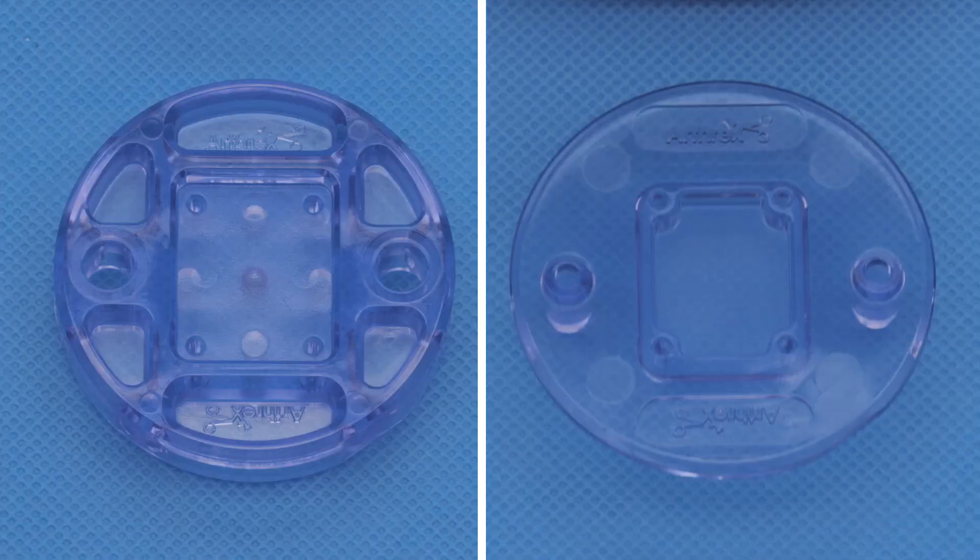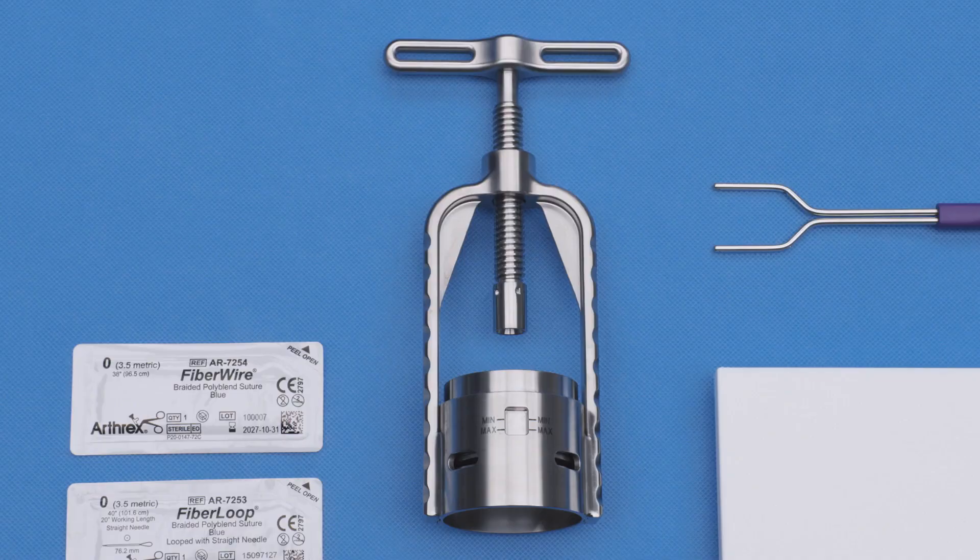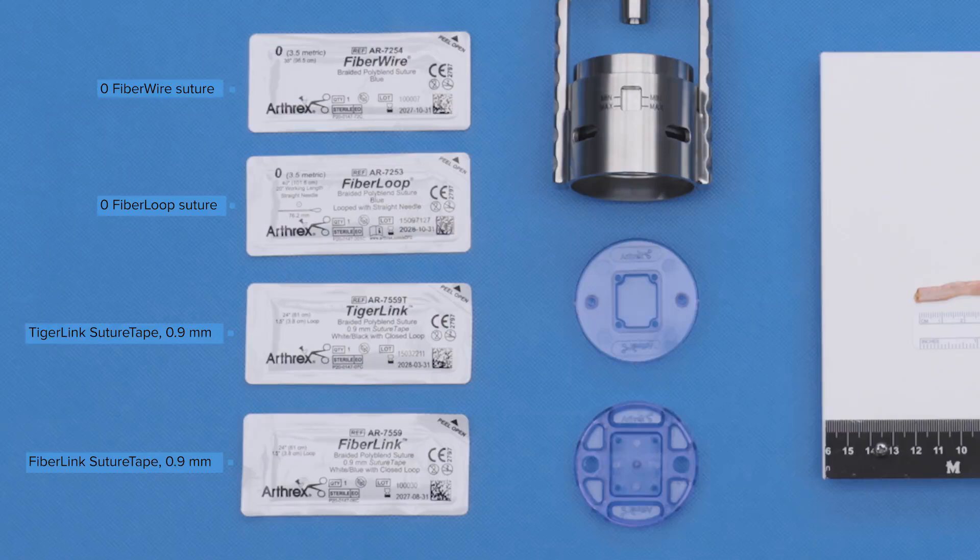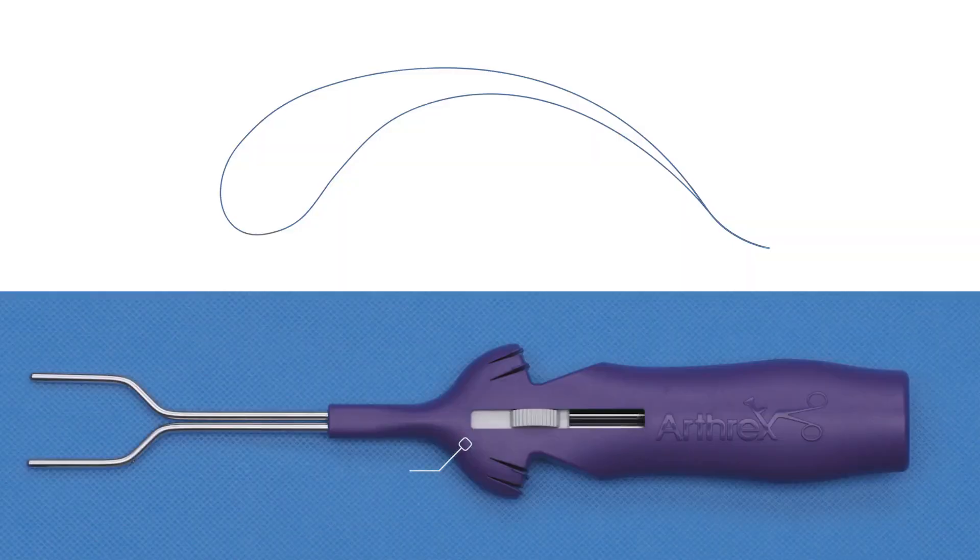To prepare the graft, you will need the compression plates, the MGS press, four sutures, a fiber loop suture, a zero fiber wire, a TigerLink suture tape, a fiber link suture tape, and a graft spreader.